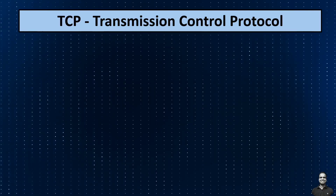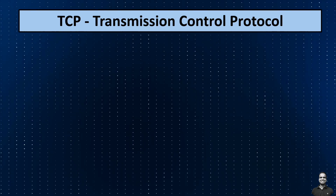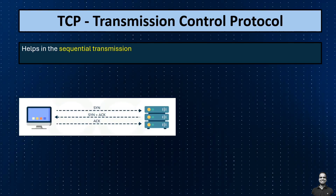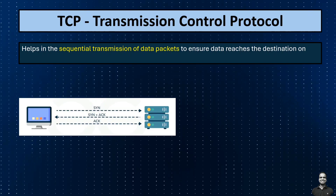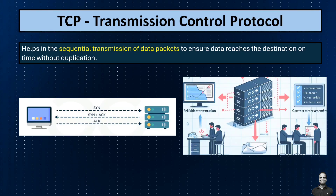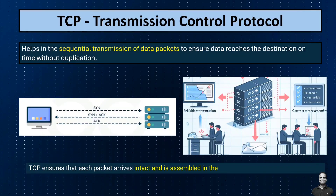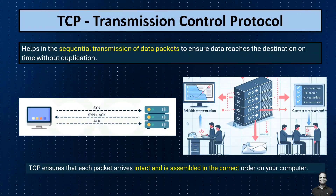Next is Transmission Control Protocol, also known as TCP. It is a reliable and connection-oriented protocol that helps in the sequential transmission of data packets to ensure data reaches the destination on time without duplication. For example, when you download a file from the server, TCP ensures that the data packets comprising the file are transmitted reliably and in the correct order — like when you download a large software update, TCP ensures each packet arrives intact and is assembled in the correct order on your computer.